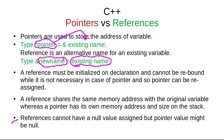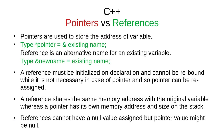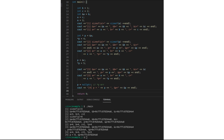Also, references cannot have a null value assigned to them, but a pointer's value might be null. You can assign a null pointer to a pointer, while a reference cannot be assigned a null pointer or null value.